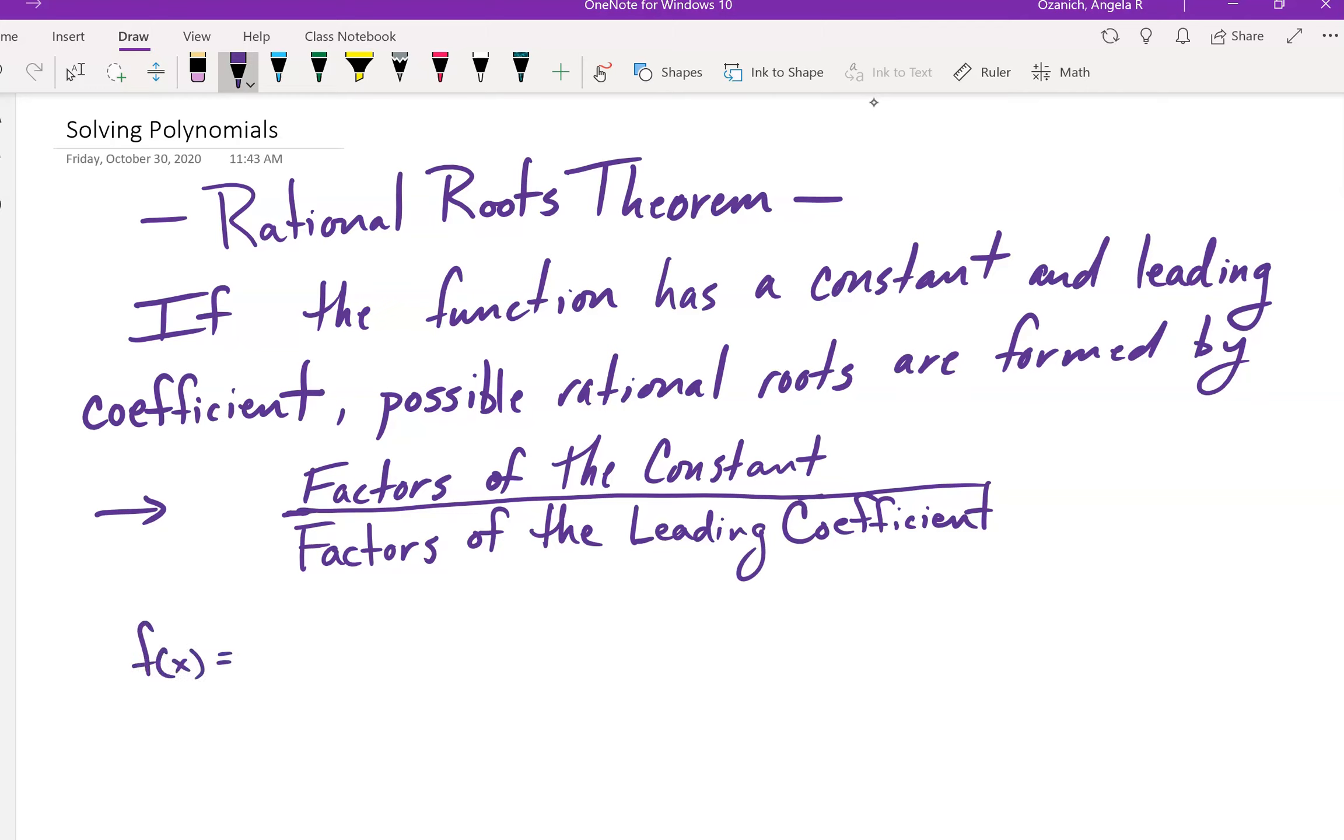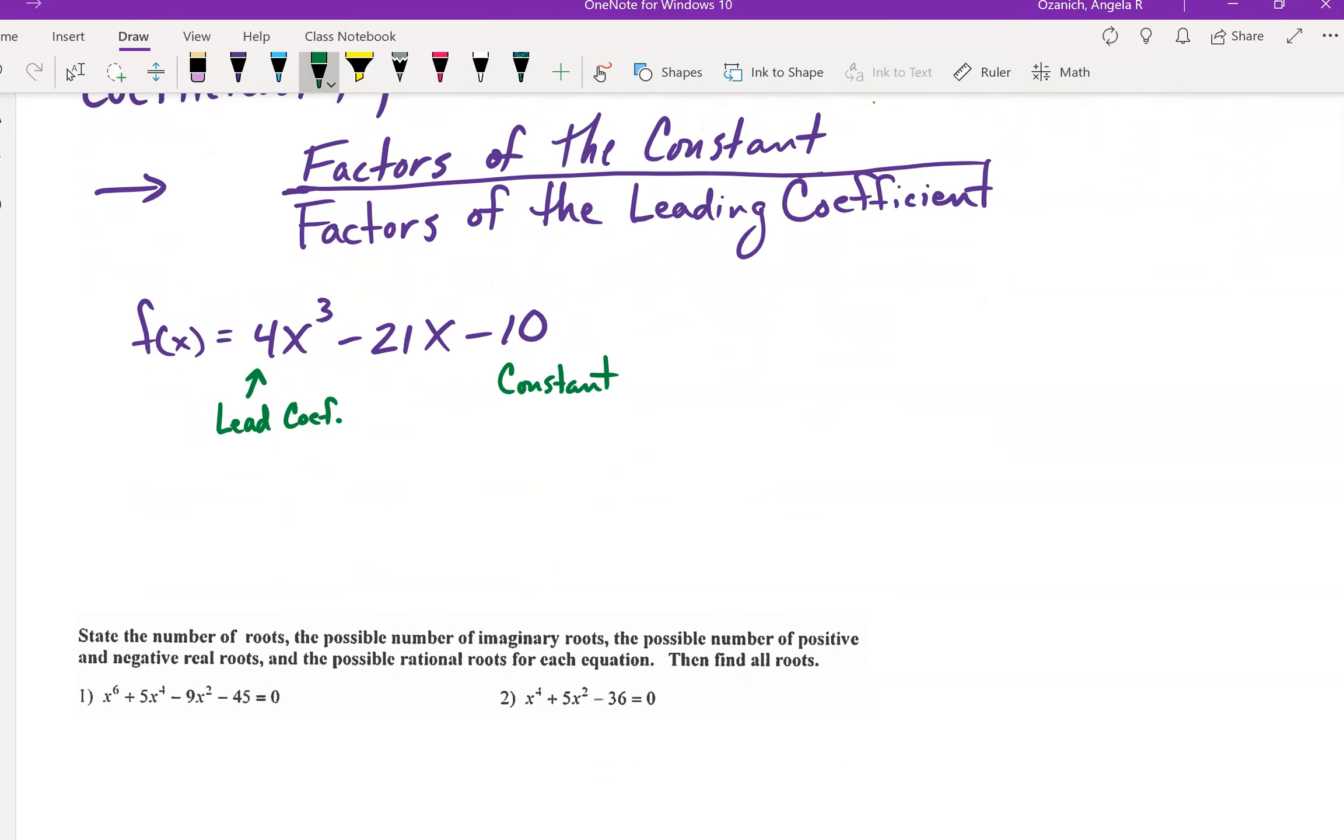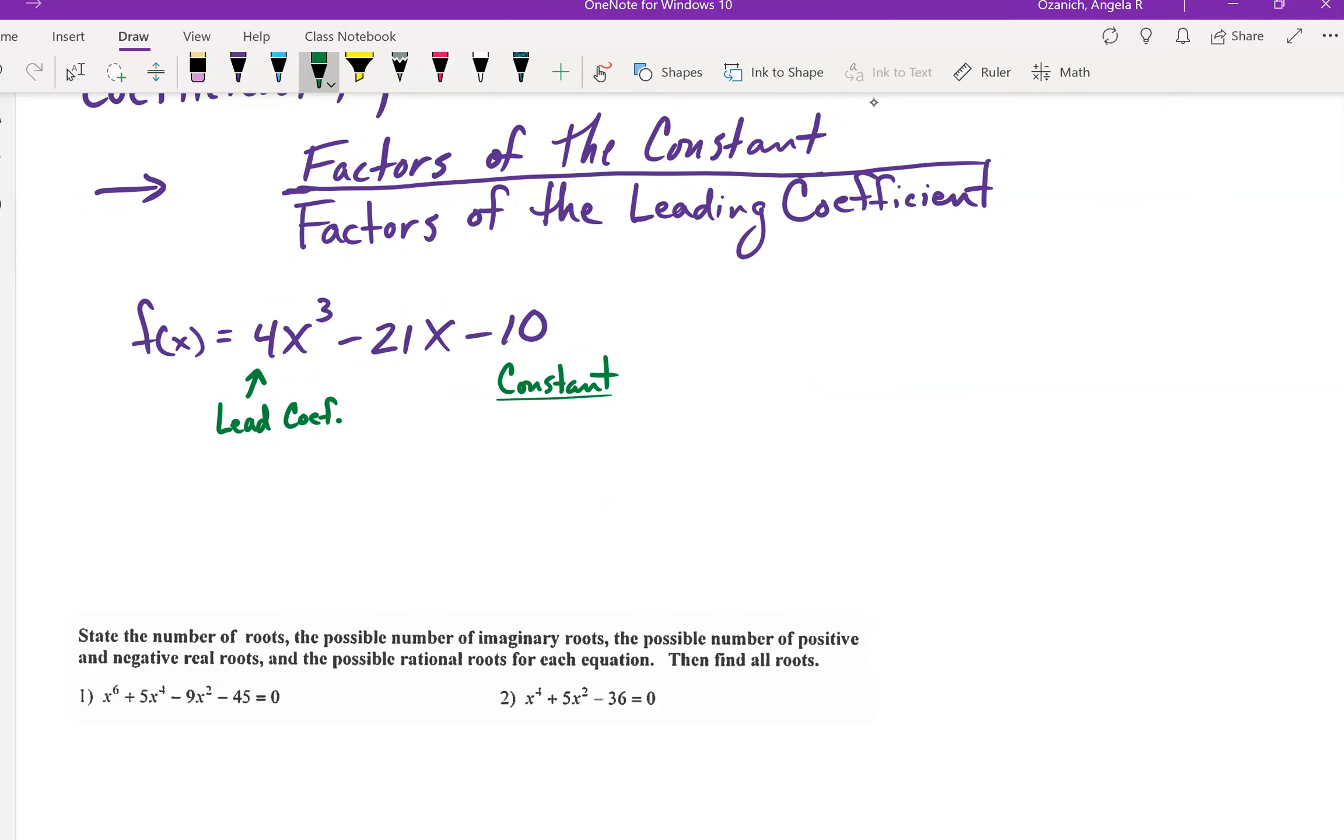Okay, so one of the things that I think is important is to see how this looks as an example. So let's just use f(x) is equal to 4x cubed minus 21x minus 10, for example. Okay, so this is our leading coefficient, right? This is the leading coefficient. This is our constant, and when we think of factors of these numbers, we're going to include both positive and negative factors. So I'm going to go ahead and make a list of the factors of our constant. So we're going to start with the constant. Factors of the constant include 1, okay, and 2, and 5, because 2 times 5 is 10, and 10.